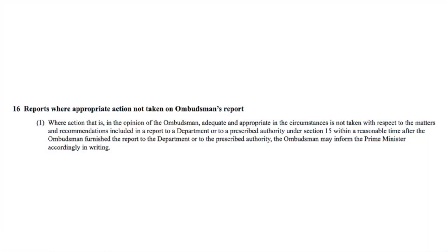The teeth come in section 16, which says that if the Ombudsman provides a report to the department and the department either takes no action or takes action which the Ombudsman considers is inadequate, the Ombudsman can then report that fact directly to the Prime Minister. Those teeth are sharpened further in section 17, which says that if the Ombudsman makes a report to the Prime Minister because a department or agency has not responded adequately, the Ombudsman can also send a copy of that report to the President of the Senate and the Speaker of the House of Representatives so that the report can be tabled in both Houses of Parliament. That makes the report available to the political opposition, to the media, and to the public.